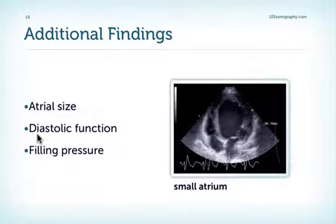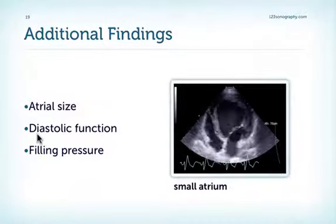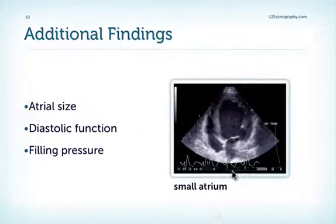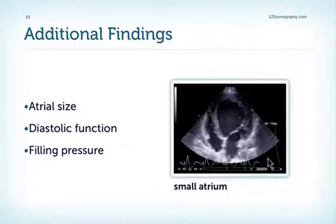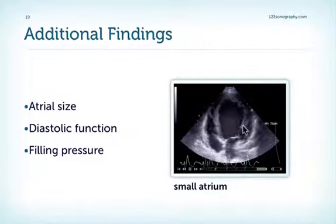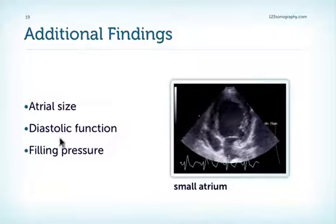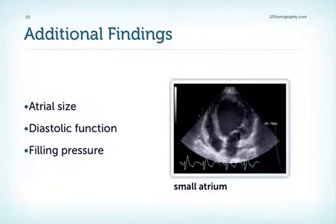There are a number of additional findings in patients with dilated cardiomyopathy. Very often you will find an increase in left atrial size. However, as you can see in this example, the left atrium does not necessarily have to be very large. In this patient, a near-normal left atrium could mean a good prognosis, simply because it may indicate that left atrial filling pressure is not elevated. Practically always will you find some degree of diastolic dysfunction, and usually at least some degree of elevated filling pressure.